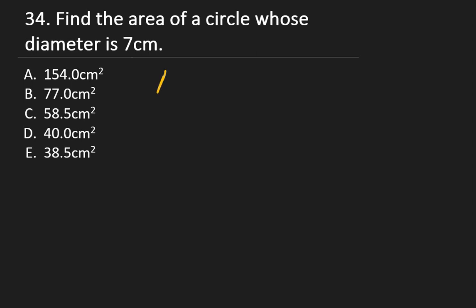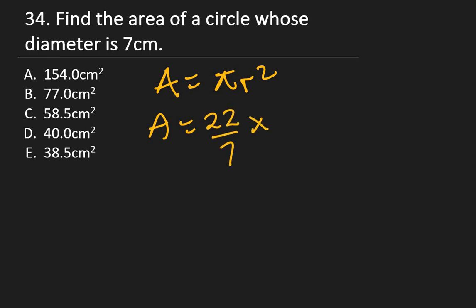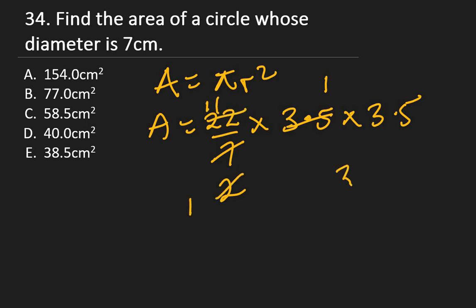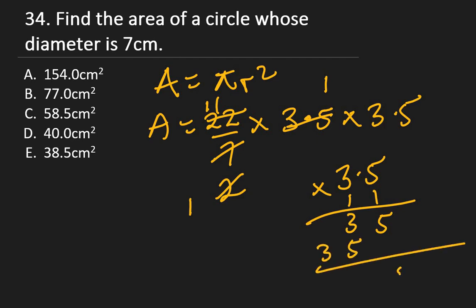Question 34: Find the area of a circle whose diameter is 7 cm. Area = πr². Radius = 7/2 = 3.5 cm. Area = (22/7) × 3.5 × 3.5. Simplify: 3.5/7 = 0.5, then 22 × 0.5 = 11. So area = 11 × 3.5 = 38.5 cm². The right answer is 38.5 cm².